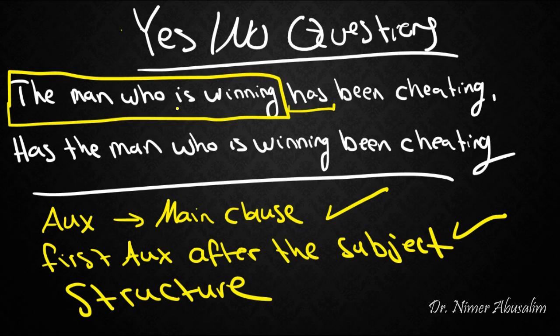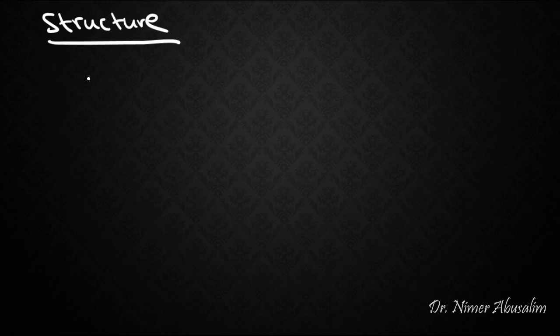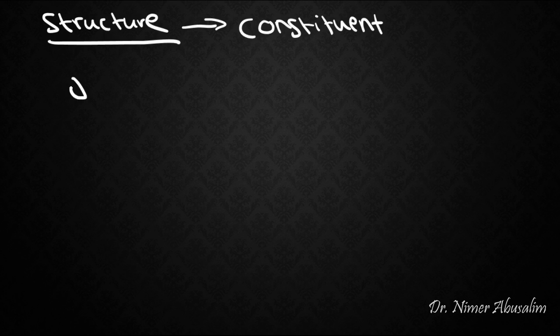We now understand that 'is' is part of the subject — the subject entirely is part of the sentence as a whole. So 'is' is more closely related to the subject than to the entire sentence. That's the basic idea behind structure. Now that there's structure, which parts function together as a unit? This is what we call a constituent.